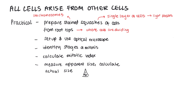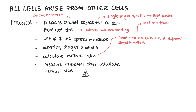You also need to know how to set up and use the optical microscope, and using your knowledge of mitosis, you should be able to identify the stages. To calculate the mitotic index, we count the total number of cells and the number of cells in different stages of mitosis. It's important to use a large number of fields of view to ensure our sample is representative, and to repeat counts to check they're correct. We also want to standardize — for example, deciding whether to count cells at the edge. To calculate the mitotic index, we divide the number of cells undergoing mitosis by the total number of cells.